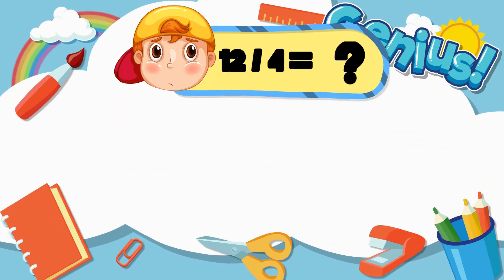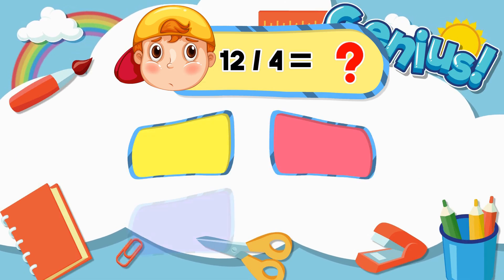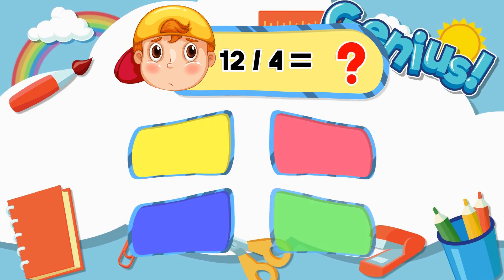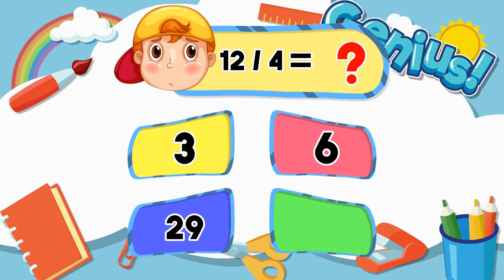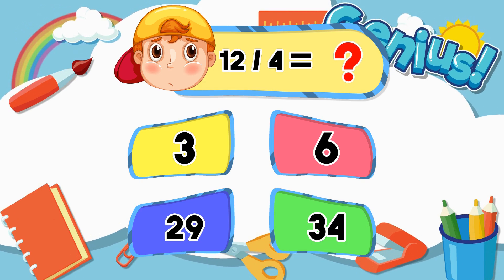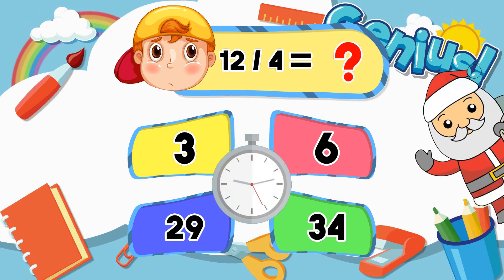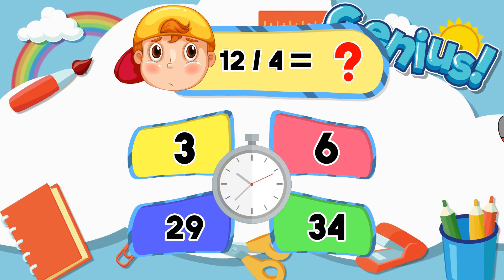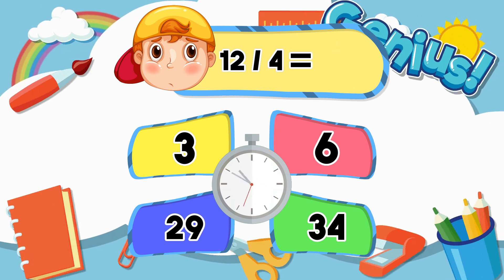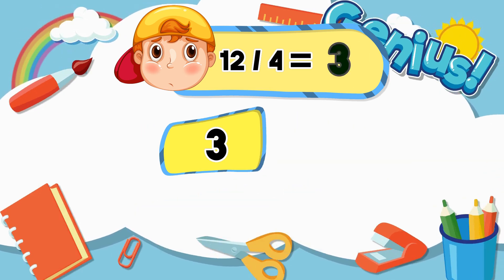What is 12 divided by 4? Options: 3, 6, 29, 34. Answer: 3.